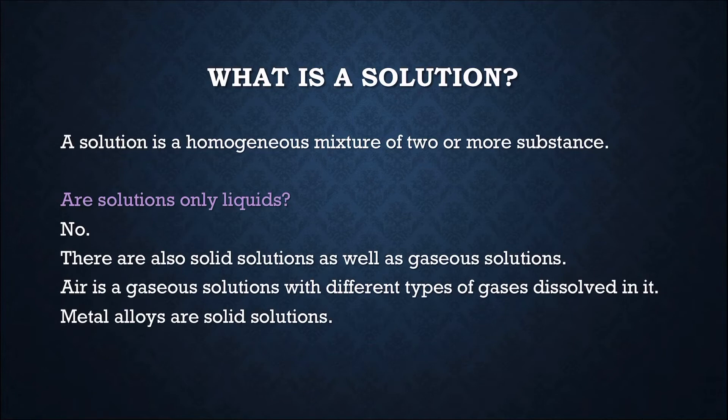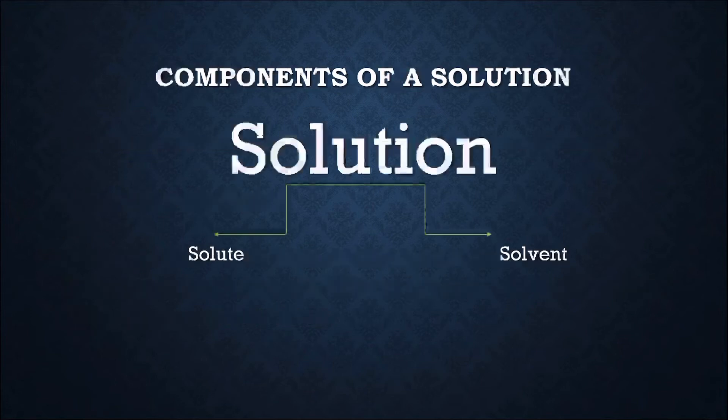Metal alloys are also solid solutions. Now, what are alloys? This seems new. Try to recall what you learnt in earlier classes about alloys. When one or more metals is mixed with another type of element, it is called an alloy. A solution has two components: a solute and a solvent.